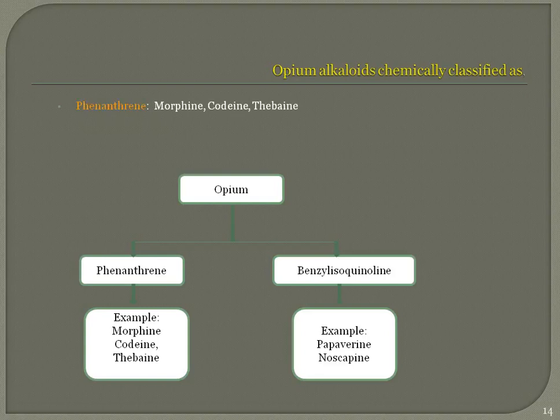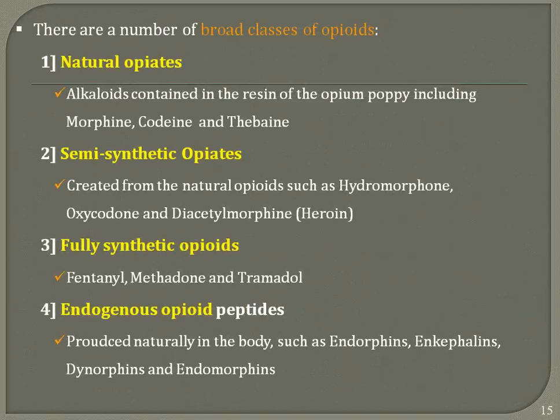There are broad classes of opiates. Natural opiates are alkaloids contained in the resin of the opium poppy, including morphine, codeine, and thebaine. Semi-synthetic opiates include heroin, hydromorphone, and oxycodone. Heroin is also called diacetylmorphine, where the hydrogen is replaced with a diacetyl functional group at the 3rd and 6th positions.